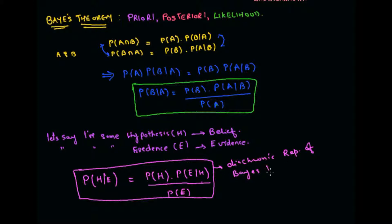Given that I already hold some belief, this is the belief I am already holding. The evidence either supports the belief, and using the probability of that evidence, I am going to update my belief with the help of the evidence. This is what the philosophy of the Bayes theorem is about.